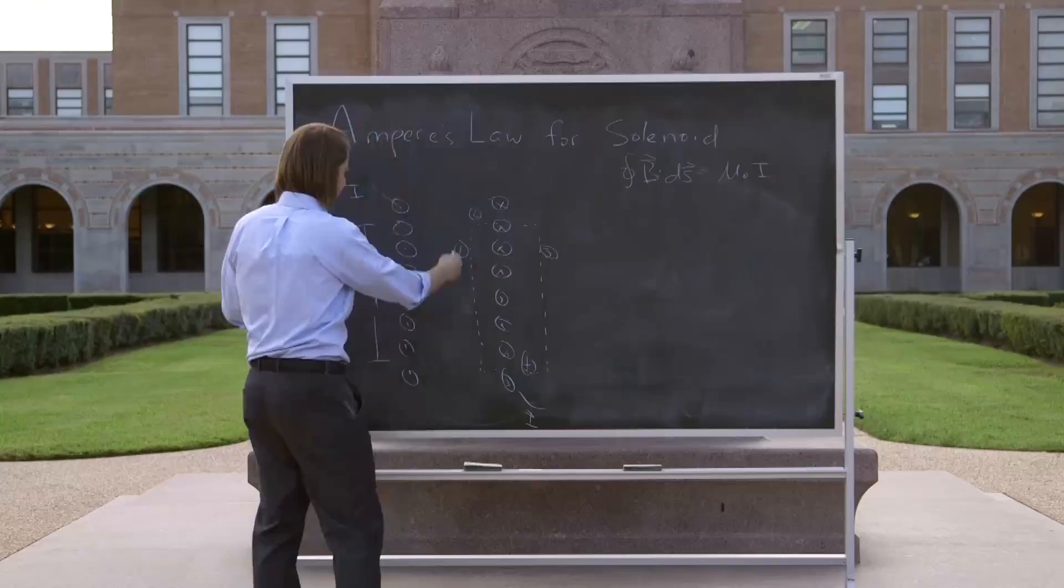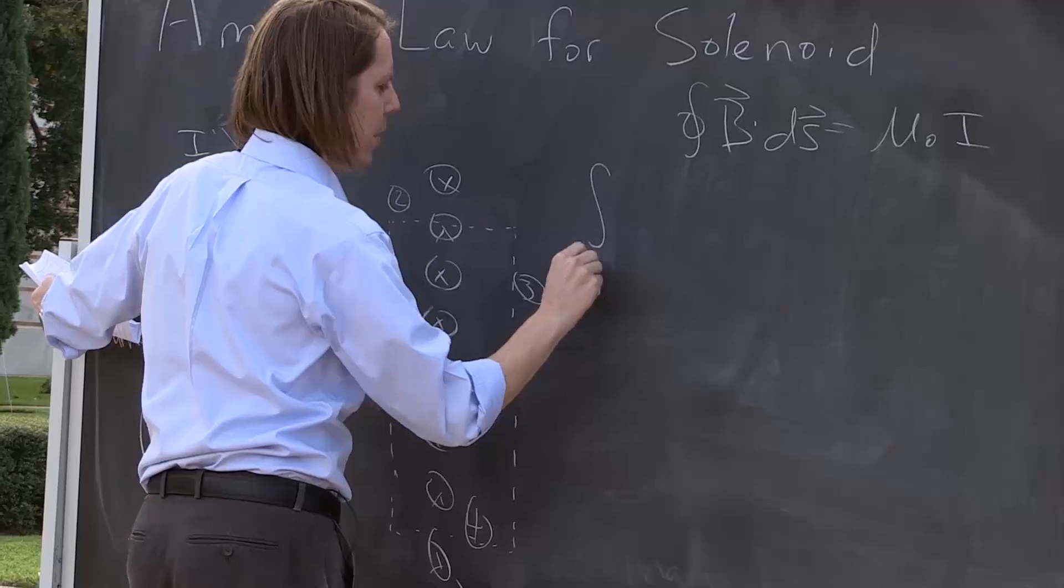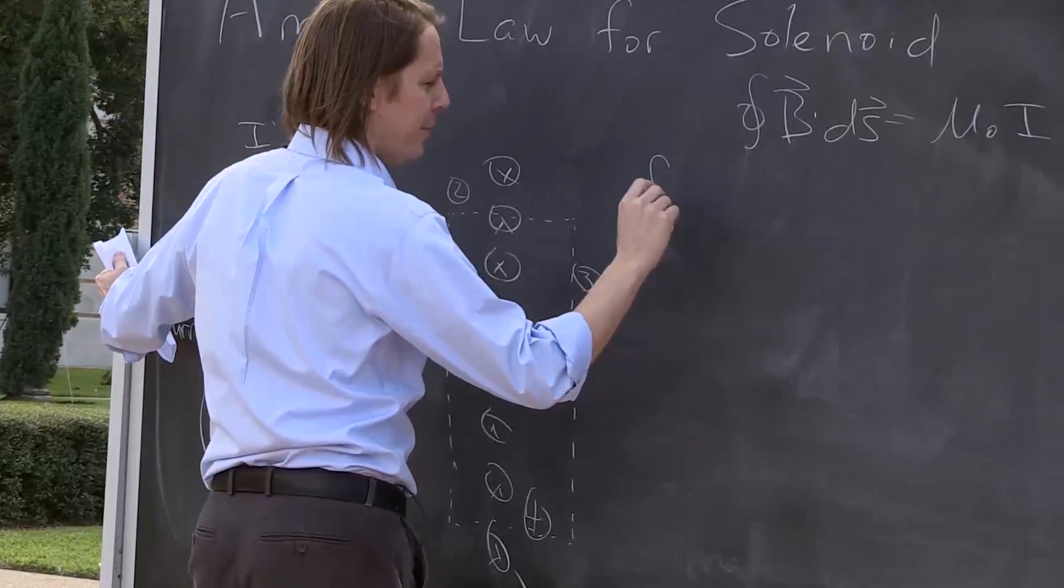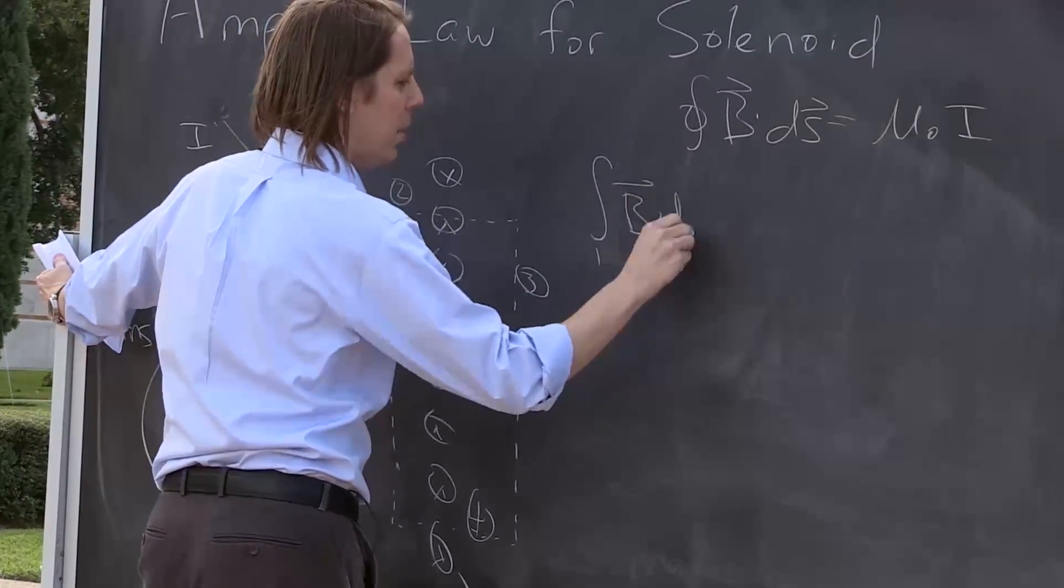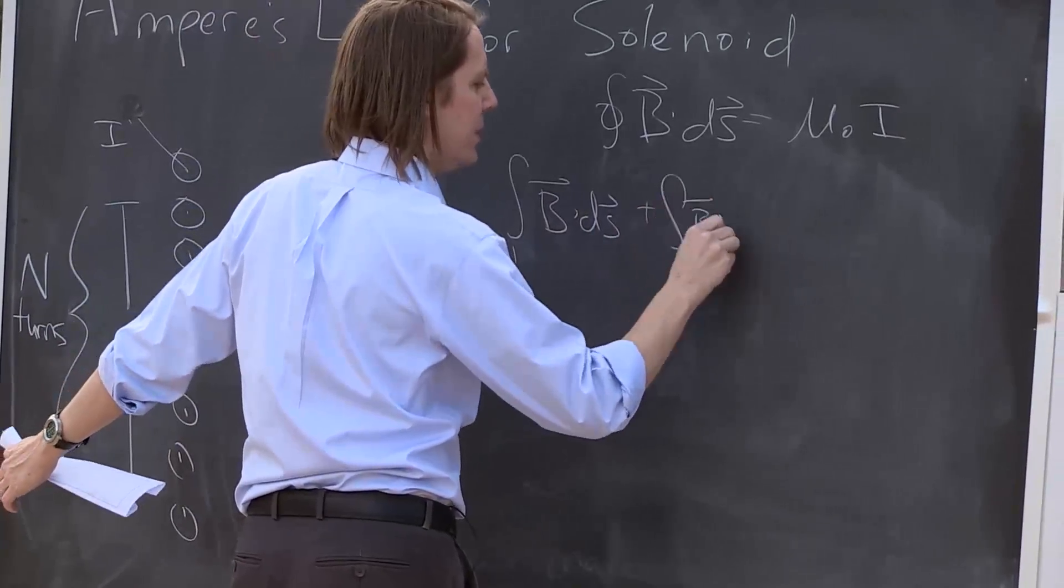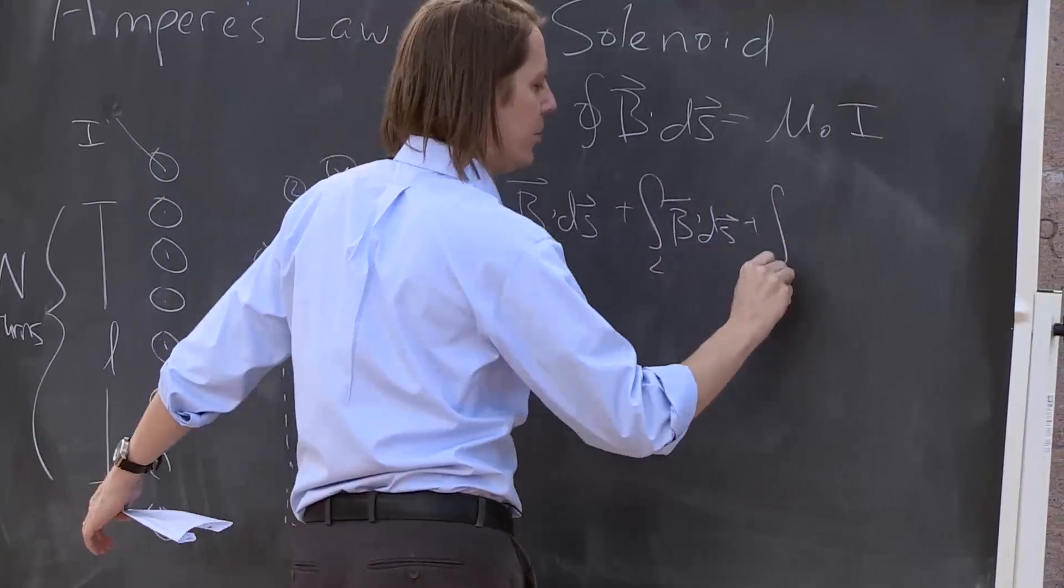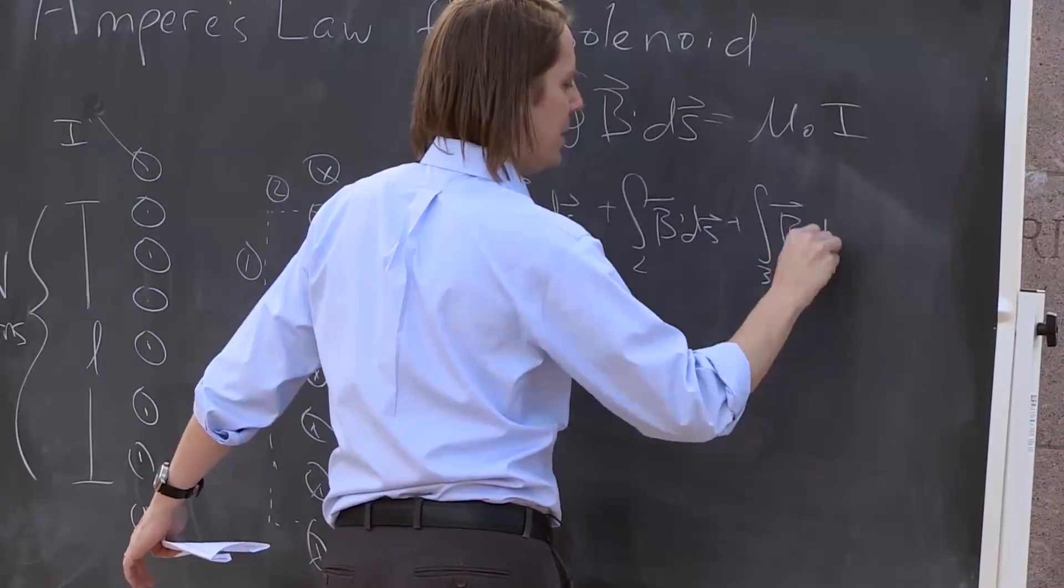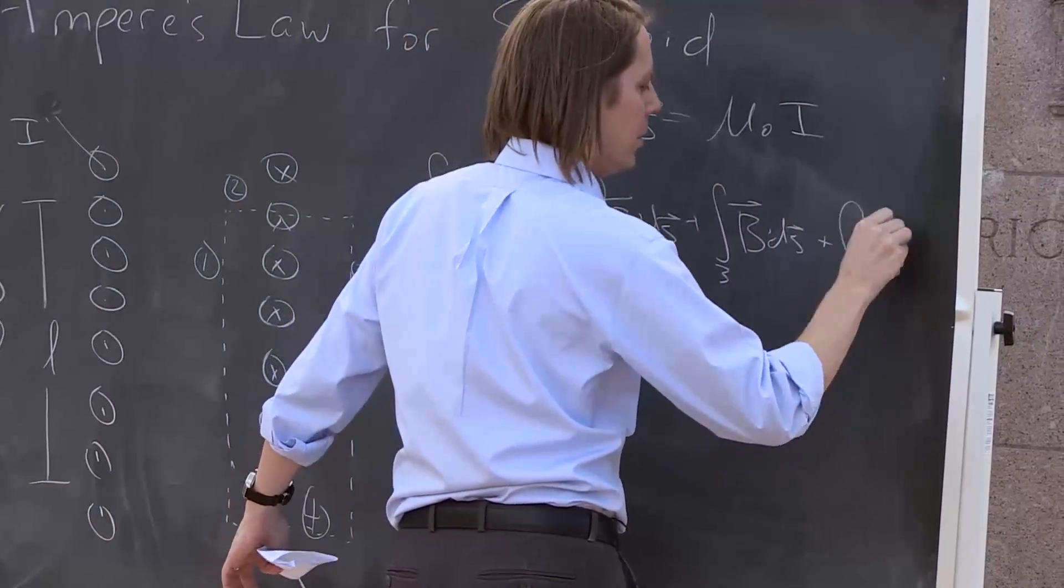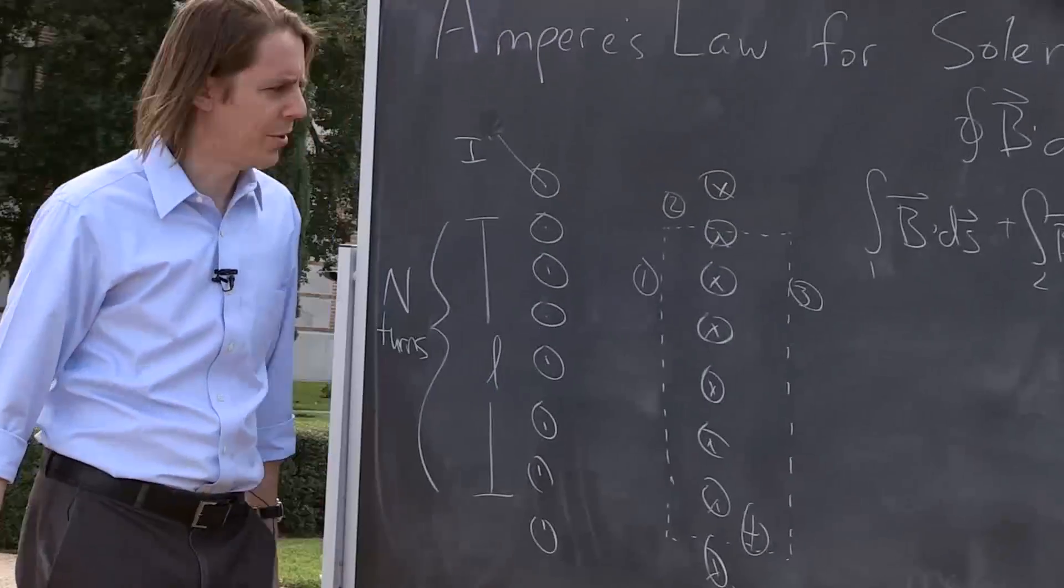So first let's do number one. So the integral, I'll just put a one there, along path one, of B dot dS plus integral of two, B dot dS, plus integral of path three, B dot dS, plus integral of path four, B dot dS. Let's figure out what all these things are.